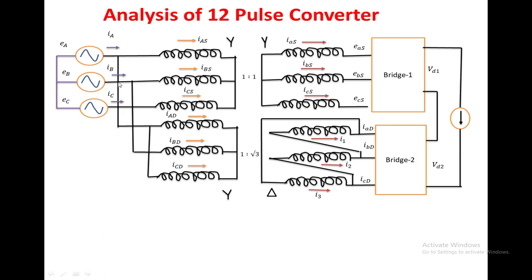Phase a, phase b, and phase c currents are supplied by the supply. If we take the phase b current, that is equal to the sum of the phase b current in the star-to-star transformer and the star-to-delta transformer. In the same manner, ia, ib, ic are the currents supplied by the sources, equal to ia_s plus ia_d; ib_s plus ib_d; ic_s plus ic_d.